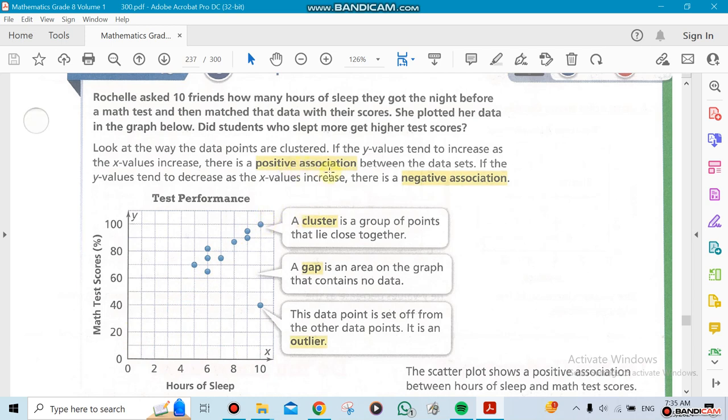A cluster is when you see most of the points are close to each other. Notice that this point by itself here—that's what we call an outlier. Outliers means it's outside the group, so there's something weird. Either the numbers are wrong or something went wrong.